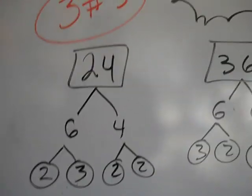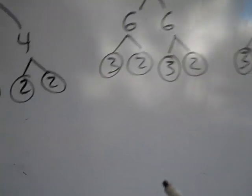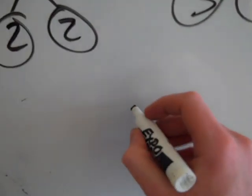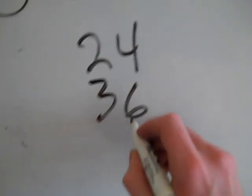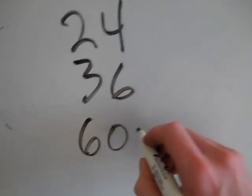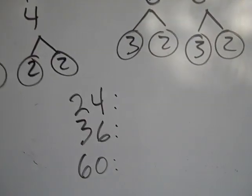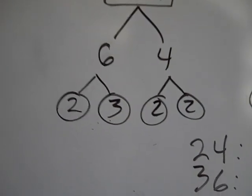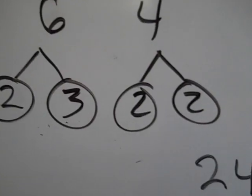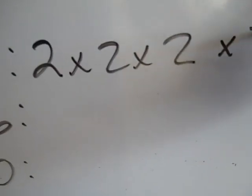Here's how this works. Once you have your three numbers and you've made your factor trees for all of them, we're going to list them in order. So I'm going to start with 24, 36, and 60, and list all of their prime factorizations right on top of each other. So 24's prime factorization was 2 times 2 times 2 times 3 — there were three 2's and then a 3.